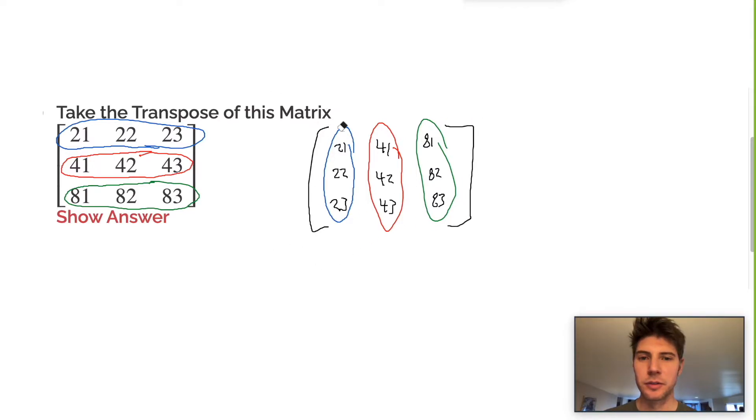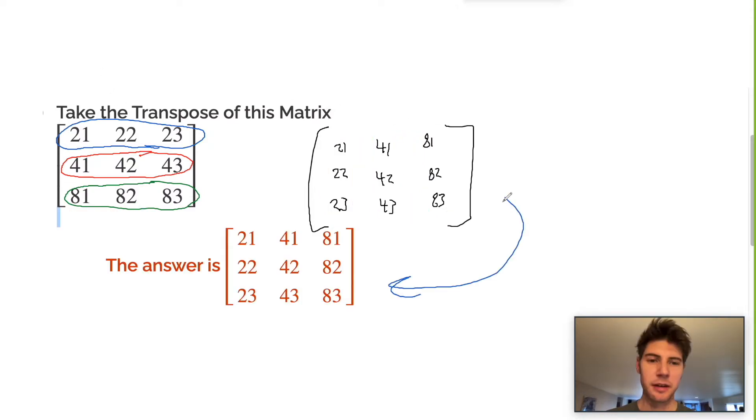If I get rid of these circles and hit show answer, these two matrices match. So that's it - that's how to do a transpose of a 3x3 matrix. Hope this makes sense.